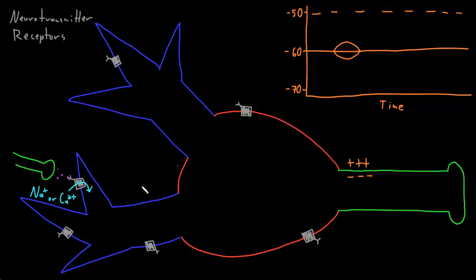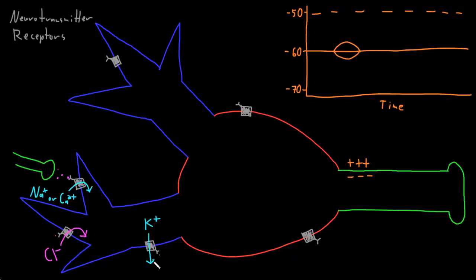Hyperpolarization usually occurs if a chloride channel is opened, because for most neurons chloride will flow into the neuron through an open channel, bringing negative charges into the already negative inside of the cell, causing the membrane potential to become more negative. That's because for most neurons, chloride has a larger diffusion force driving it into the neuron against its smaller electrical force trying to drive it out. Hyperpolarization may also occur if a potassium channel opens, because for potassium ions its larger diffusion force will usually drive it out of a neuron against its smaller electrical force trying to drive it in.